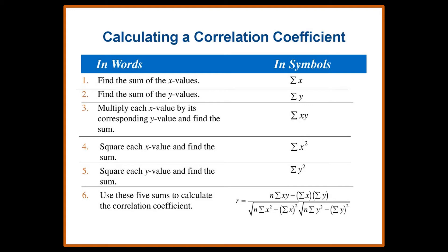When calculating a correlation coefficient, you are going to first find the sum of x values, then find the sum of y values, then multiply each x value by its corresponding y value and find the sum. Square each x value and find the sum, then square each y value and find the sum. Then, using the formula given, substitute all the values you found to calculate the correlation coefficient.